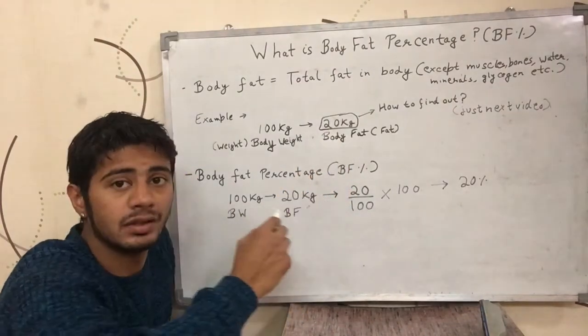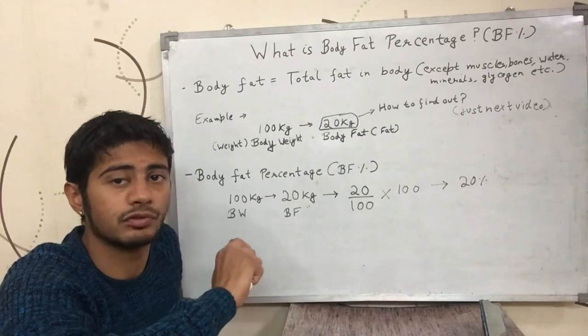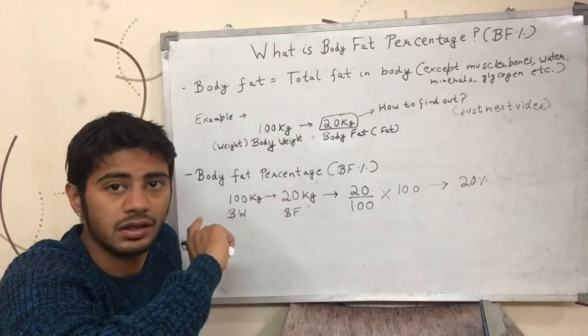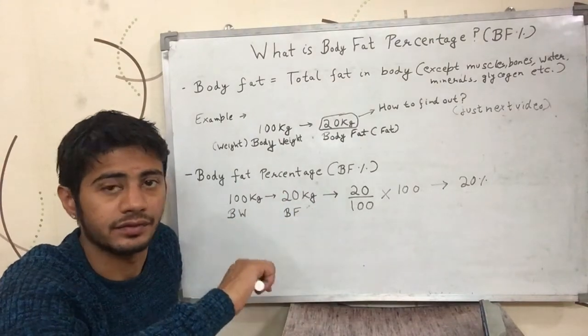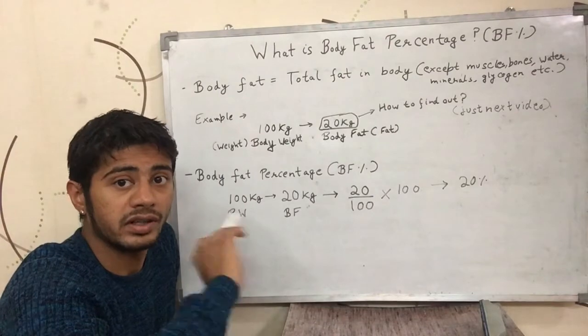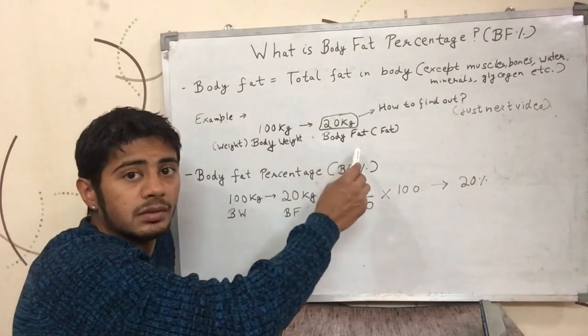Now that means that 80kg of weight in that person's body comes from muscles, bones, water, minerals, glycogen and if there is something else left which is not fat. And so the rest of the 20kg which is not in that 80kg is termed as body fat.